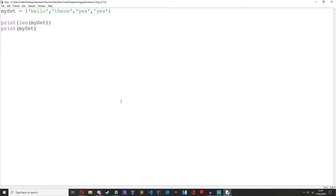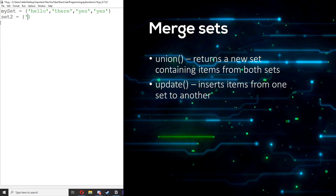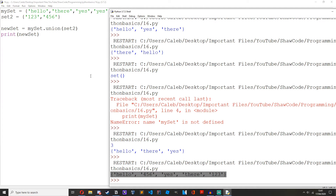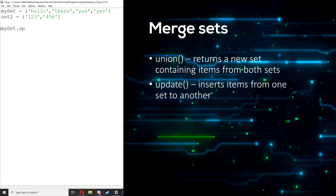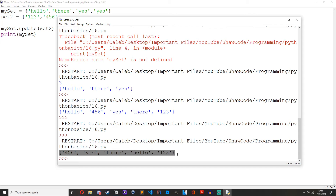To merge multiple sets together we use the union method, which returns a new set from the original two sets. We make another set: set_two = {'one', 'two', 'three', 'four', 'five', 'six'}. Then: new_set = my_set.union(set_two), and if we print new_set, my_set and set_two have been mixed together into one set. Another way to do this is the update method: my_set.update(set_two), then print my_set — one single set with both the original and second set mixed together.